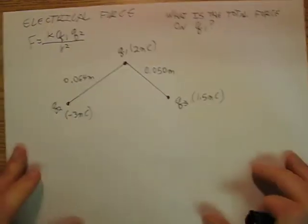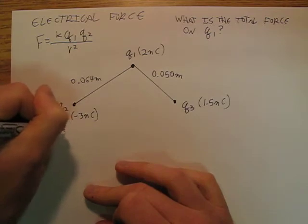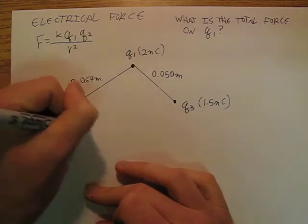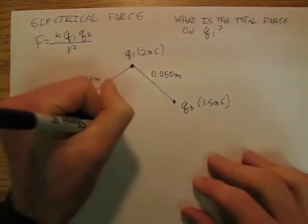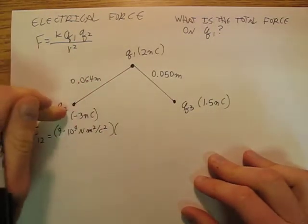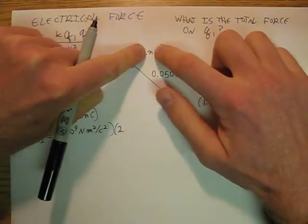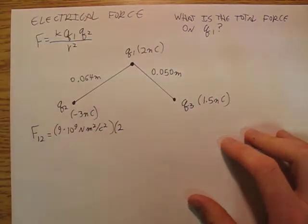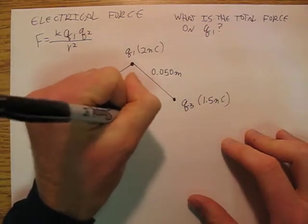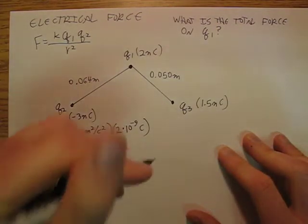So now I'm going to say F12 is going to be 9 times 10 to the 9th newton meter squared per coulomb squared, which is my value for K. And then I'm going to have Q1 is 2. Now I've got to remember what that nano means. Nano means times 10 to the negative 9th coulombs.